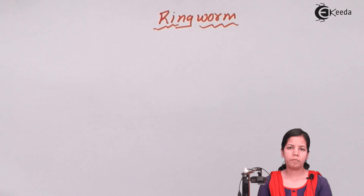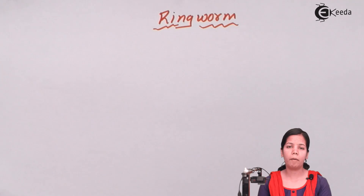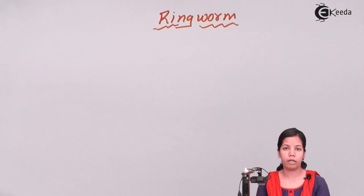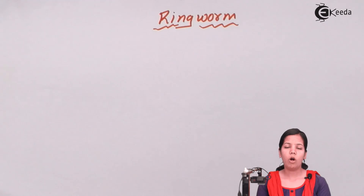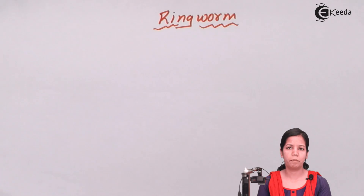Basically, Ringworm is present as a circular red inflammation on the upper parts of your body, especially the hand region, the inner parts of the ear, or behind your ear lobes.